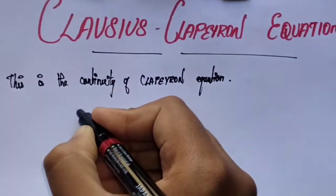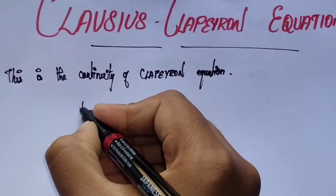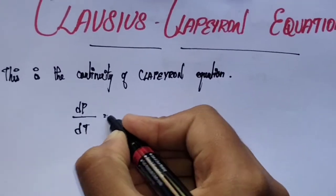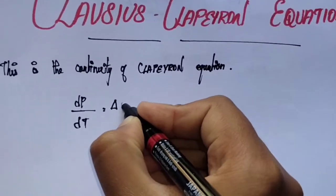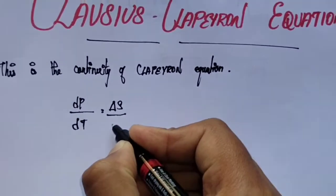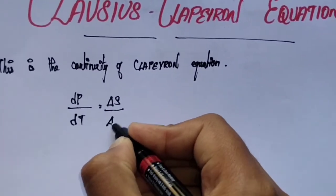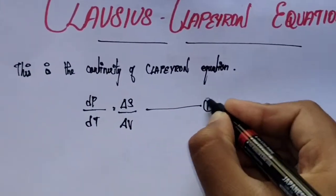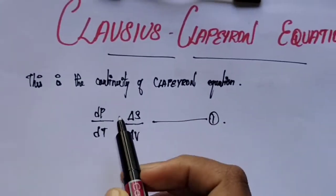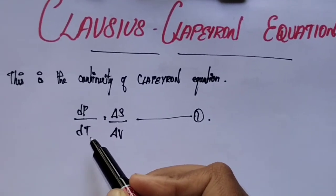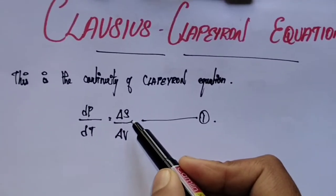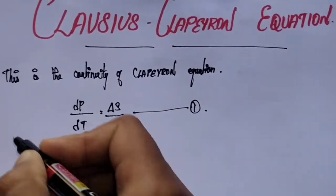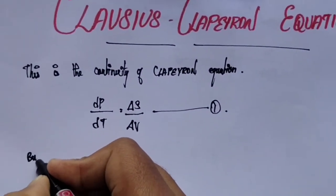According to Clapeyron's equation, we know that dP/dT is equal to ΔS/ΔV. Take this as equation number 1. In this equation, P is pressure, T is temperature, S is entropy, and V is volume.